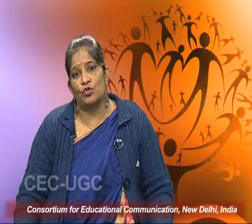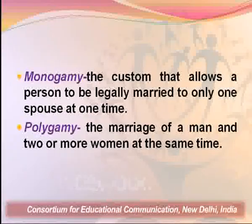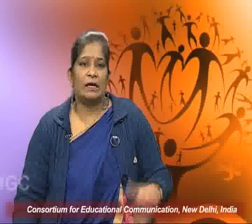The second rule of marriage is endogamy — marriage between people of the same social category, meaning we marry within the group. The group may be caste, class, tribe, race, village, or religious group. At the level of sub-jati, or subcaste, marriages are endogamous — there is a preference for finding a marriage partner within the same jati. We also have the rules of monogamy and polygamy. Monogamy is the rule of one-to-one partnership. Polygamy involves multiple partners — polyandry, where there are multiple husbands, and polygyny, where there are multiple wives.